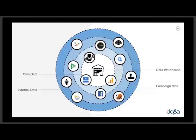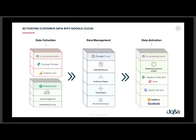For this case, we brought in Google Marketing Platform data — website and campaign data — and added CRM data, yield management data, and availability and pricing data into the warehouse. But a data warehouse is just storage; it doesn't do anything on its own. So on top of it, we built an audience engine, a yield engine, a recommendation engine, and a marketing automation engine. These engines look into the data warehouse and take action.